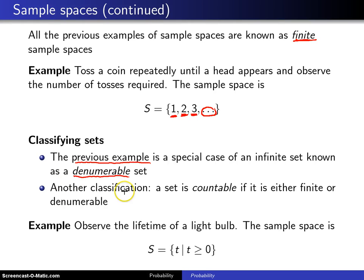Here is still another classification. A set is known as countable if it is either finite, like those examples on the previous page, or if it is denumerable, like the example here with tossing a coin repeatedly.